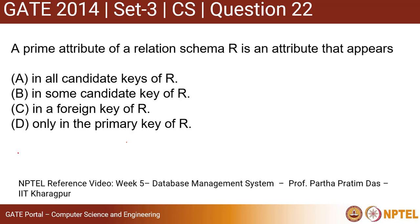This question asks: a prime attribute of a relation schema R is an attribute that appears — and you have four options. A says: in all candidate keys of R. B says: in some candidate key of R. C says: in a foreign key of R. D says: only in the primary key of R.